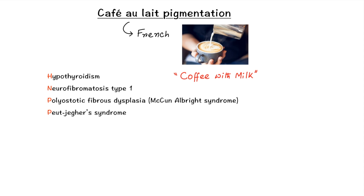Now let's see some diseases in which café-au-lait pigmentation is commonly seen. They are hypothyroidism, neurofibromatosis type 1, polyostotic fibrous dysplasia — commonly in McCune-Albright syndrome — and Peutz-Jeghers syndrome.